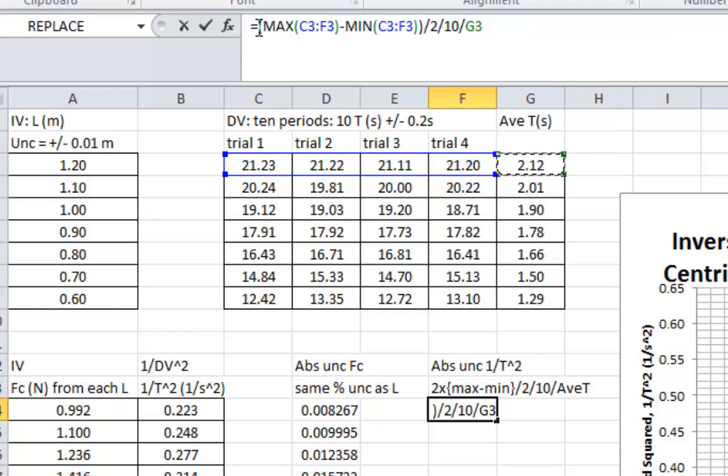and then we divide by the average. So we click on G3 box. Finally, we're going to multiply everything with 2 because we are squaring the values. And when we square the values, we double the percentage. Finally, we need to multiply by 1 over the time squared. So finally we get this value.